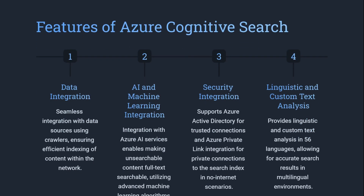It also has data integration so you can feed information from any systems. Machine learning integration is used for enabling you to search on unsearchable items, something like an image or a PDF. It also has security integration with Azure Active Directory, so you can have this private and it is also used for secured content as well. Linguistic and custom text analysis — it does support multilingual, almost 56 languages.